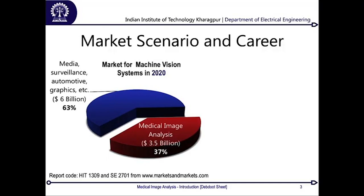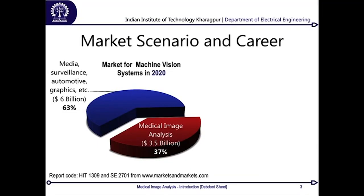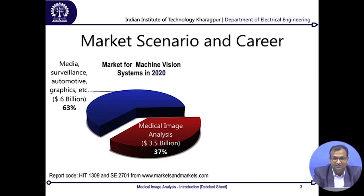By the time of 2020, which is approximately when most of you are going to graduate or be one or two years into your career, the whole machine vision market would be worth about 9.5 billion dollars. Out of this, three and a half billion dollars — which is 37 percent of the total share — would be taken by medical image analysis itself. This is not a small chunk in any way.